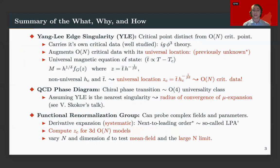So just to summarize the what, the why, and how of this whole thing. For the what is the Yang-Lee edge singularity. It's a critical point, and it's distinct from the O(N) critical point. By distinct, I mean it carries its own critical data, and this is well studied. It's a phi cubed theory with a purely imaginary coupling.